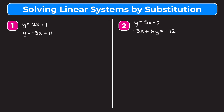For number one we have the lines y equals 2x plus 1 and y equals negative 3x plus 11. When using substitution, we first want to isolate one of the variables in either equation. This problem already has y isolated in the top equation, so we get to skip that first step.